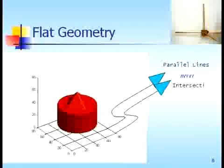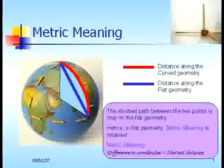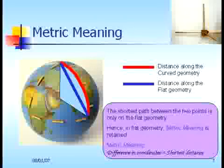Whereas in a flat geometry, parallel lines never intersect and it is always planar. Another important property is that in case of a flat geometry, the distance between two points is also the shortest distance between the two, also called the difference in coordinates. Whereas the distance in a non-flat or curved geometry is much larger than the shortest distance. Hence, the shortest path between two points is only found in flat geometry and the metric meaning is therefore retained.